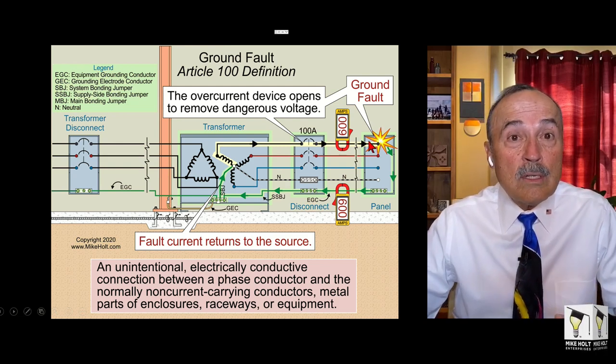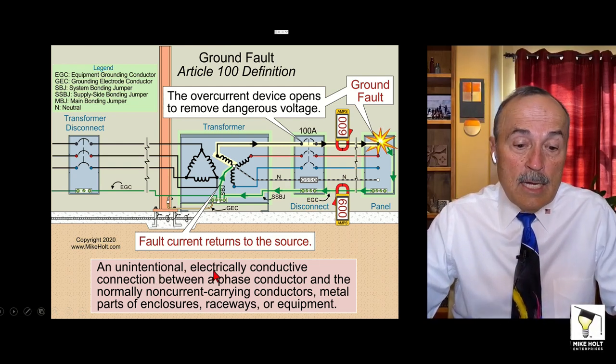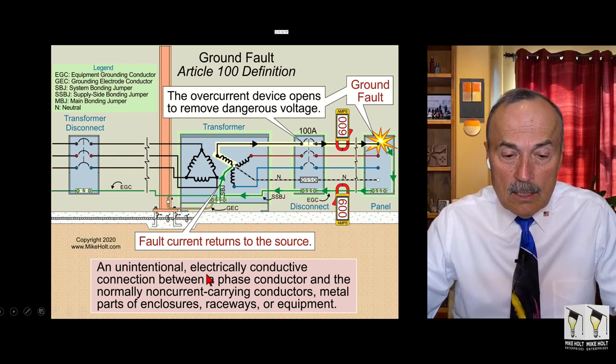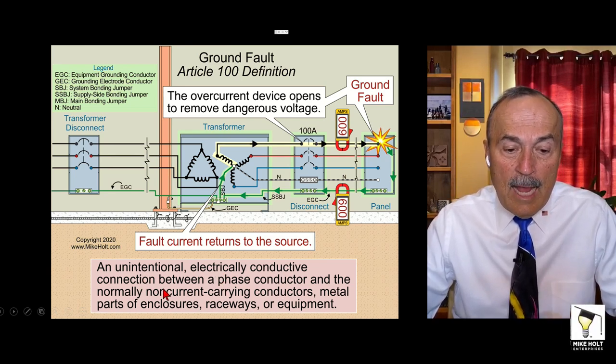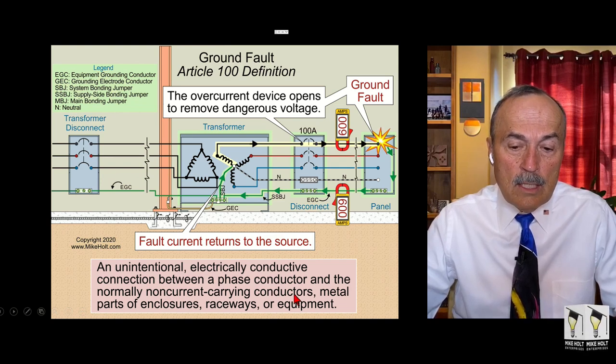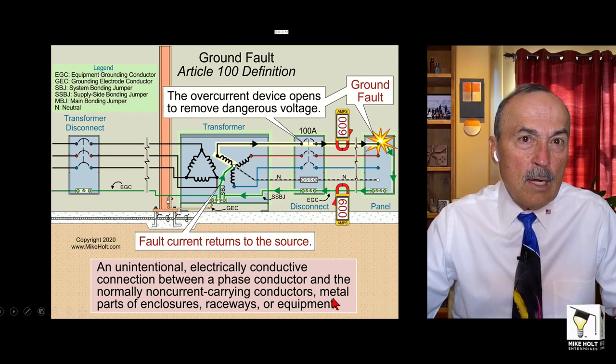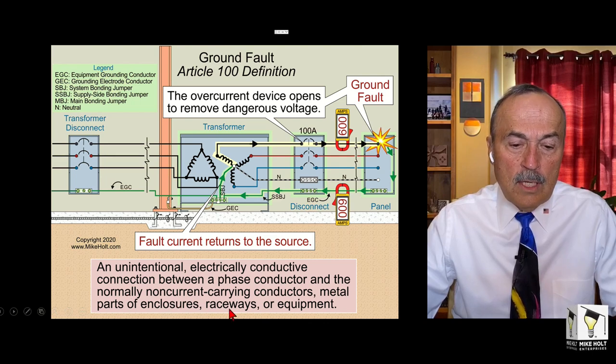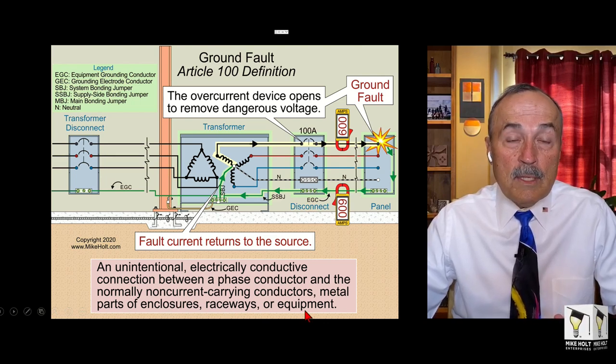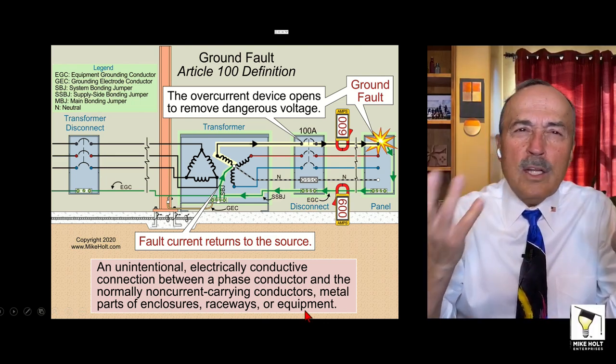Why? Because it's a definition in Article 100 and this is what they call it: an unintentional electrically conductive connection between the phase conductors and the normally non-current carrying conductors, would be like an equipment grounding conductor, metal parts of an enclosure, raceways, or equipment. So in a way they gave it a name, but Mike, why did they call it a ground fault?